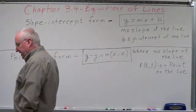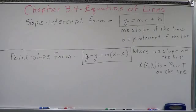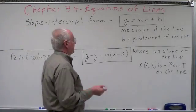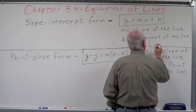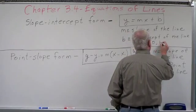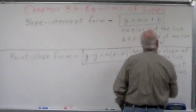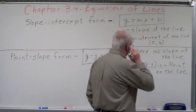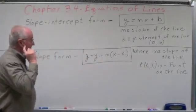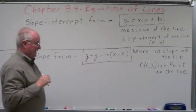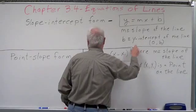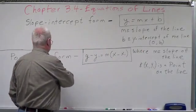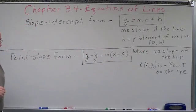Now in actuality the y-intercept of the line is a point. The y-intercept looks like this: zero and b — so that actually is a point. So in actuality we could also use point-slope form with this.